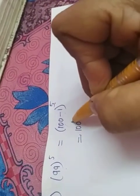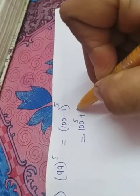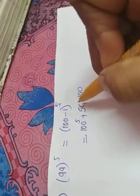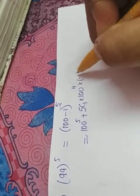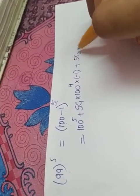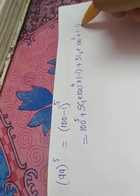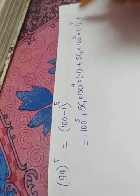The first term will be 100 raised to 5 plus 5c1 into 100 raised to 4 into minus 1 plus 5c2 into 100 cube. We have to decrease the power of 100 into, increase the power of minus 1 which is minus 1 square plus...